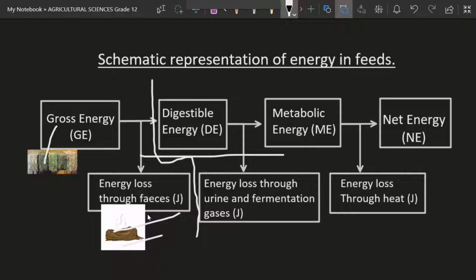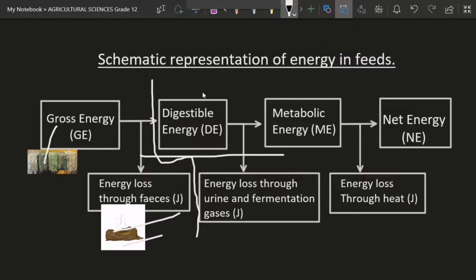After we have subtracted the loss of energy through feces from the gross energy, we're going to have digestible energy. This is where we have the process called digestibility — we talked about it in the last video about nutritive ratios. Digestibility is the amount of nutrients absorbed by the body, but since today we're talking about energy, it will be the amount of energy absorbed by the body.